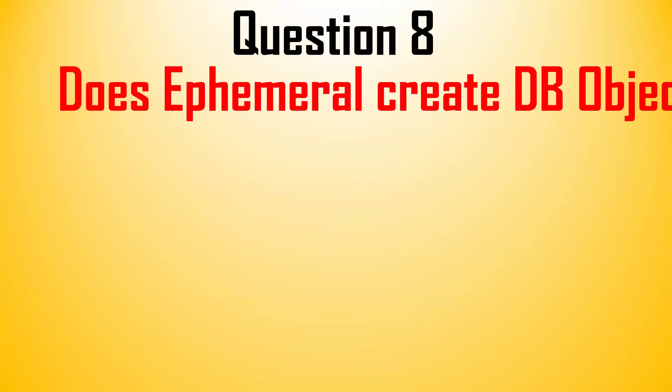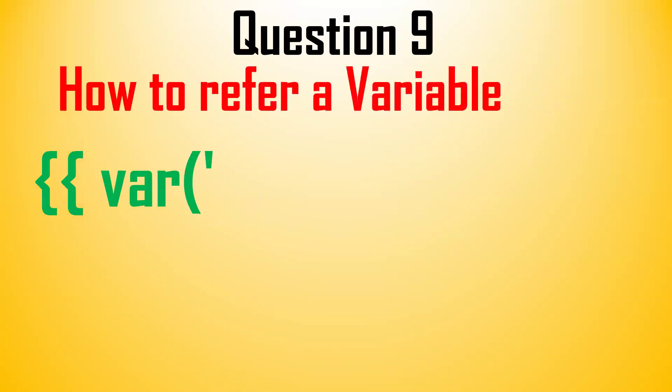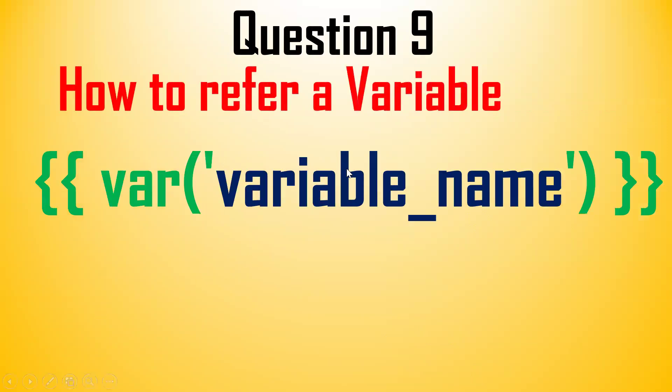The next question is: does ephemeral create a DBT database object? The answer is no — it is not a physical database object. It is not physically created in Snowflake. The next question is: how do you refer to a variable? By using the `var()` function and passing the variable name, we can refer to a variable.